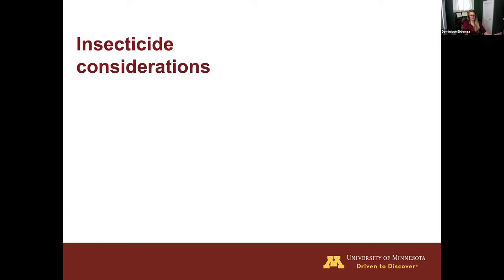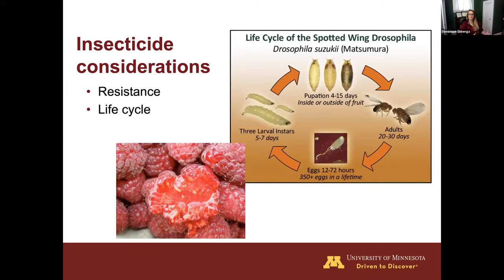Reiterating insecticide considerations: resistance management is very important, so follow regulations and switch between classes of insecticides to minimize that resistance building quickly. Going back to the SWD life cycle — the majority of their life cycle is concealed within the fruit, so insecticide applications are really only targeting adults that happen to be present during spray application. It's important to understand their biology and target times when adults are most active.